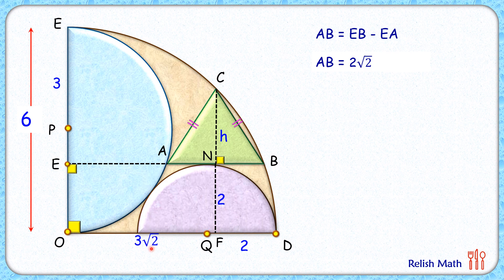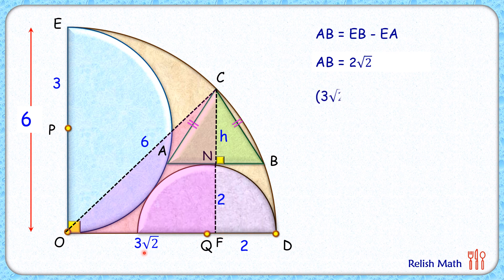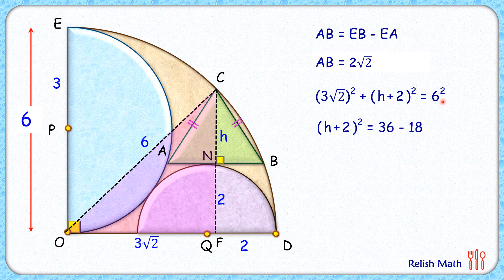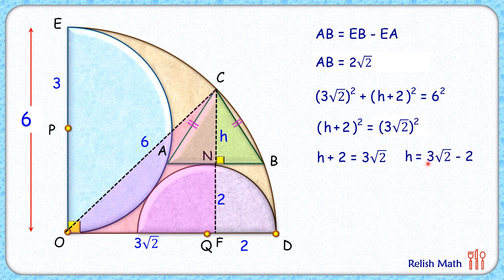Now let's join point O, the center of the quadrant, to point C. This is also the radius of the quadrant: six centimeters. In triangle COF, applying the Pythagorean theorem, we get: (three root two) squared plus (h plus two) squared equals six squared. Three root two squared is 18, so (h plus two) squared equals 36 minus 18 equals 18, which is (three root two) squared. Solving it and taking the positive value, h plus two equals three root two, so the height h equals three root two minus two centimeters.